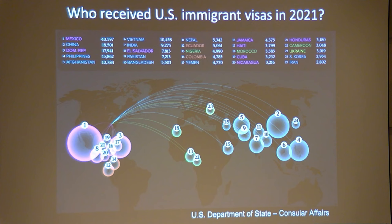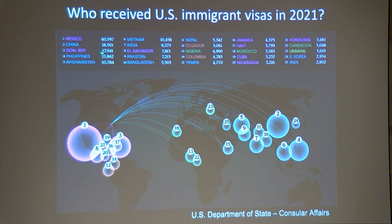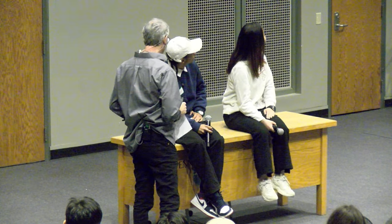Take a look at the people who received immigration visas in 2021 — there are really no 'white countries' in the top list. Mexico is the highest at 40,000. The Dominican Republic is almost 18,000. Where are the white people? Well, Ukraine. And Iran — most Iranians would look kind of white. This is the future of the United States — it is blackening and browning.